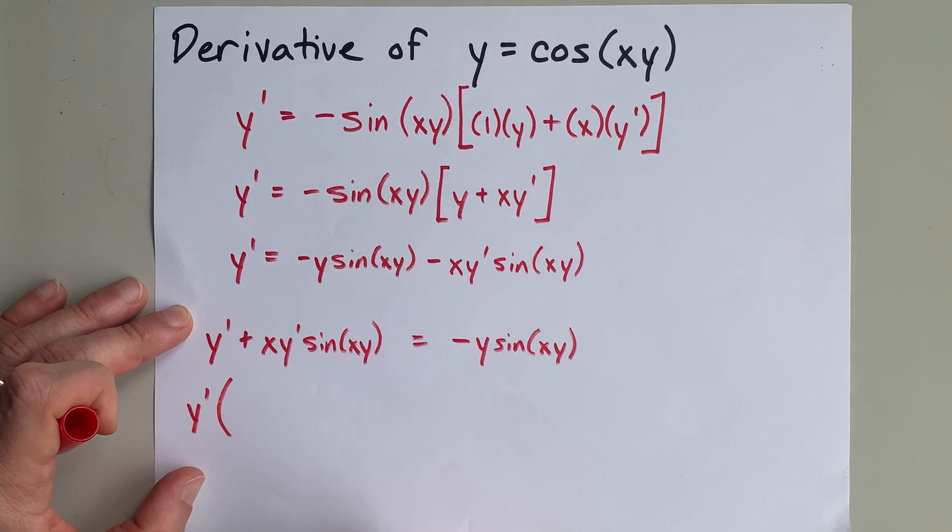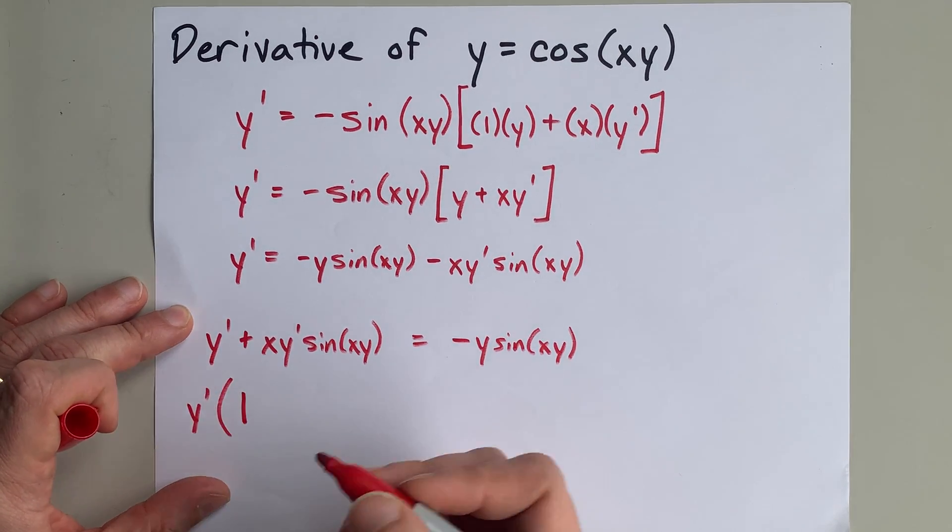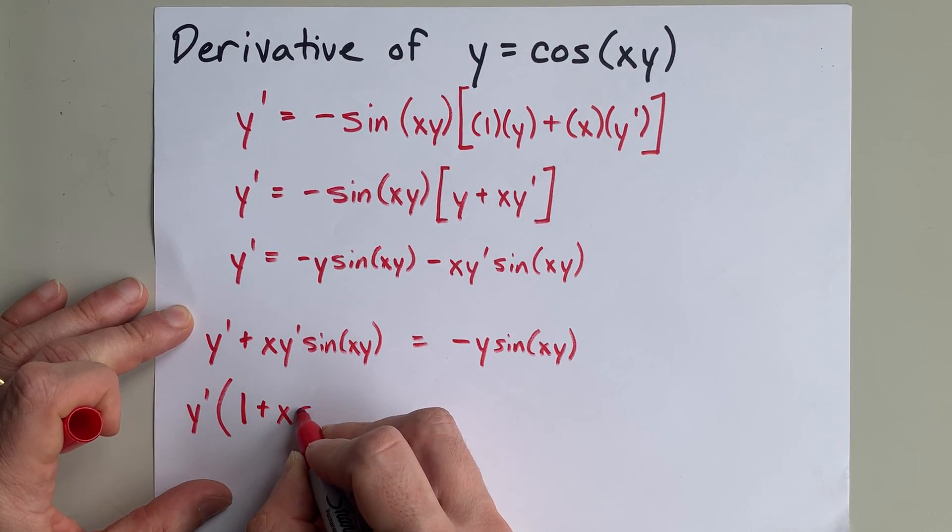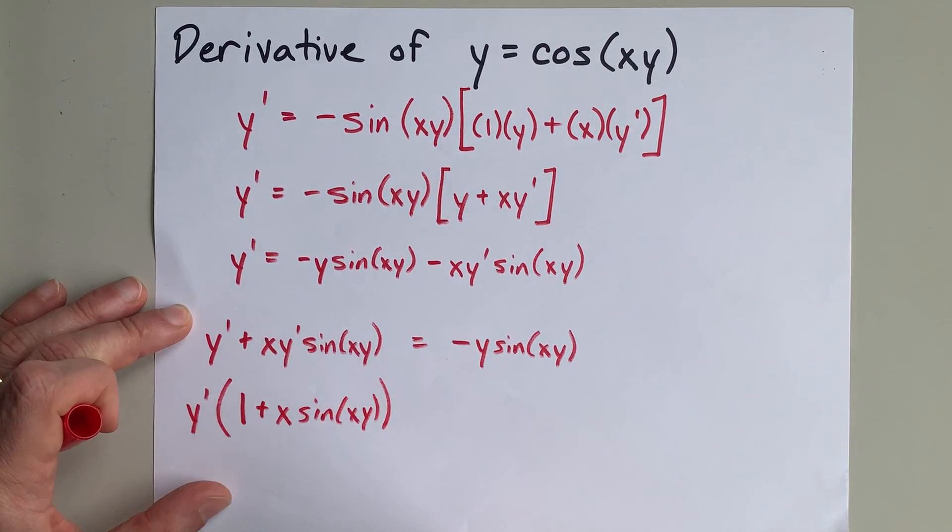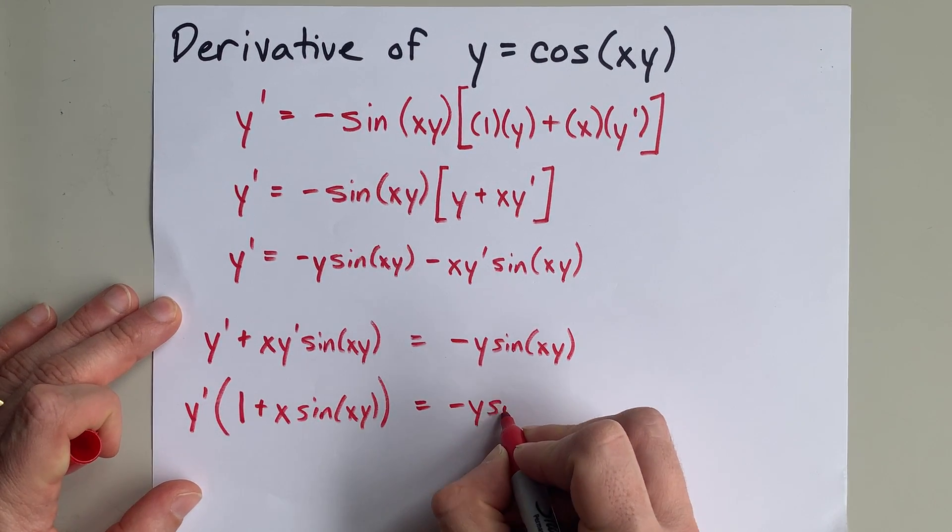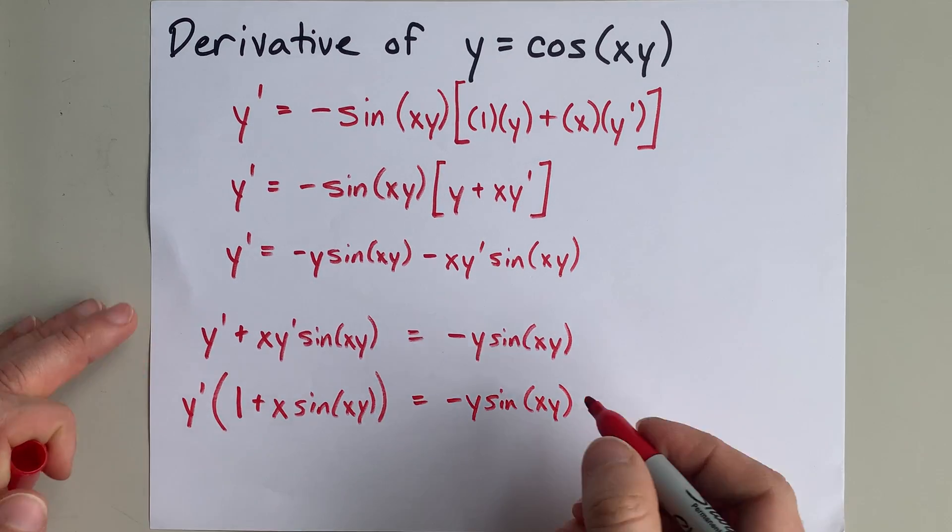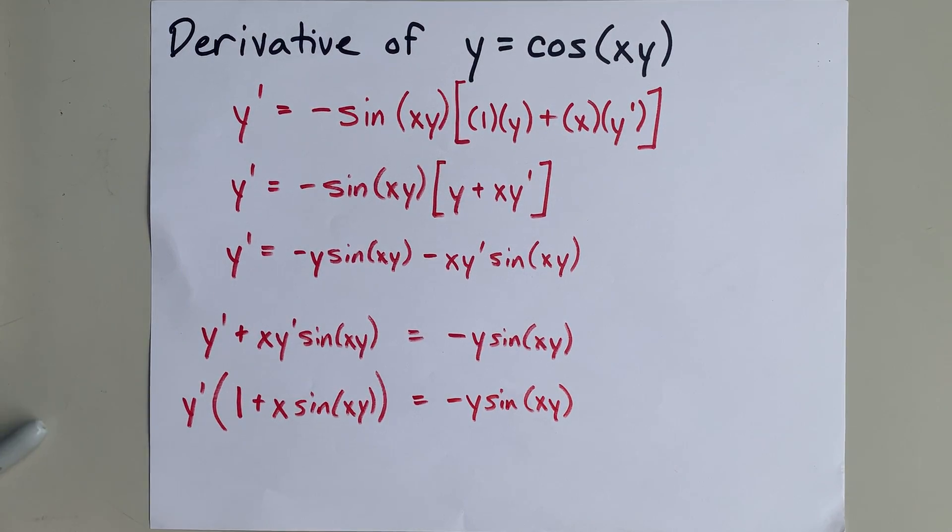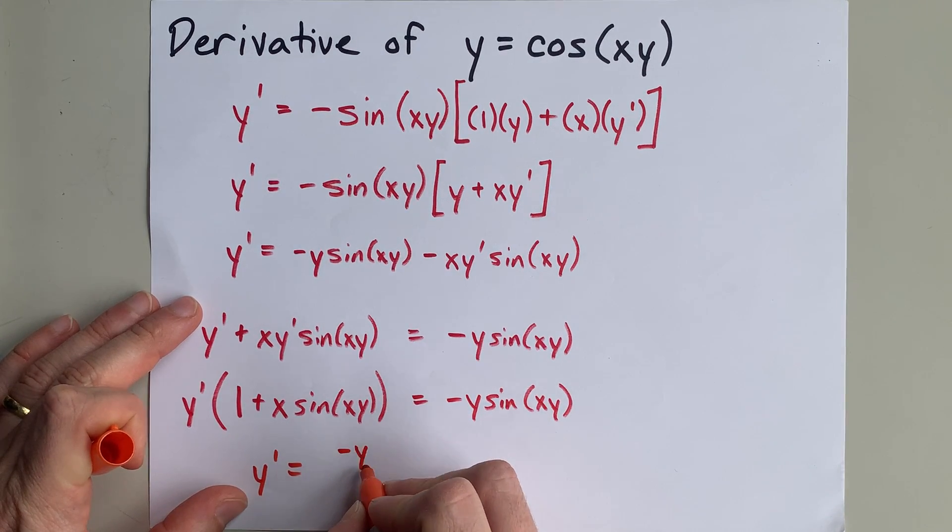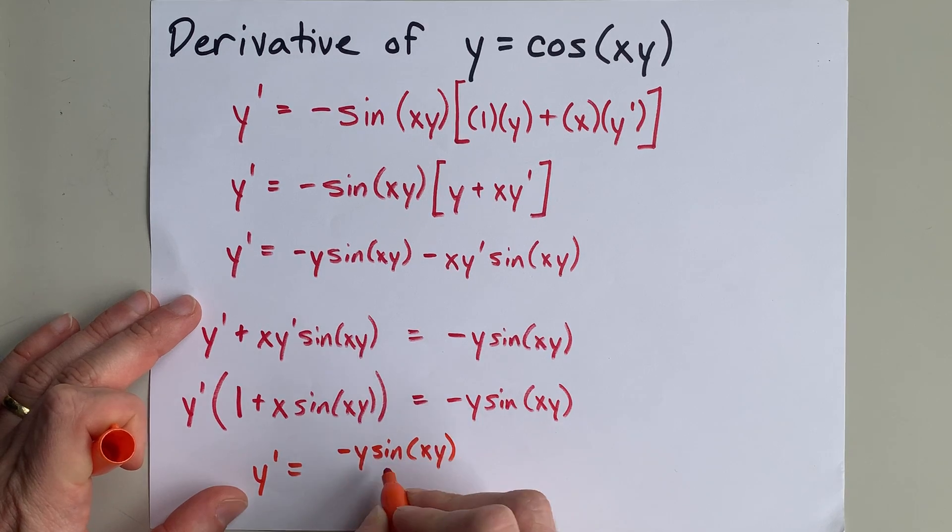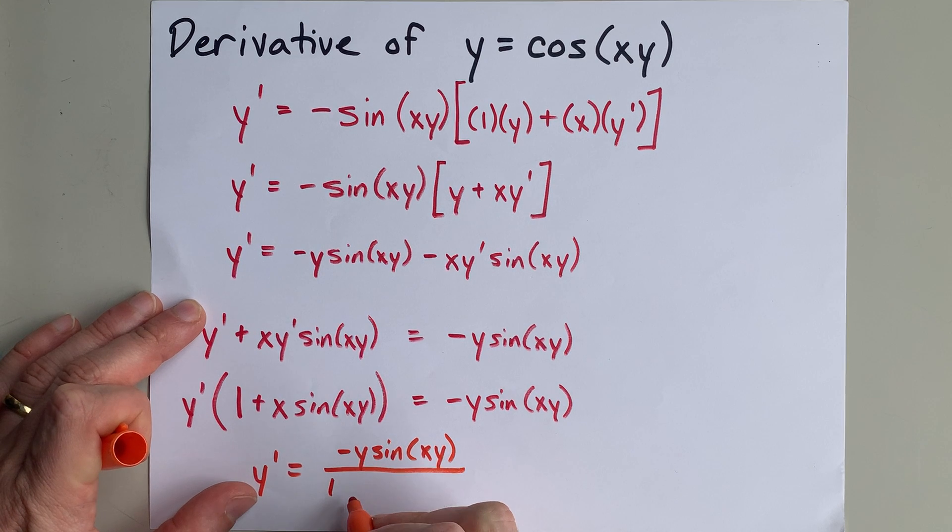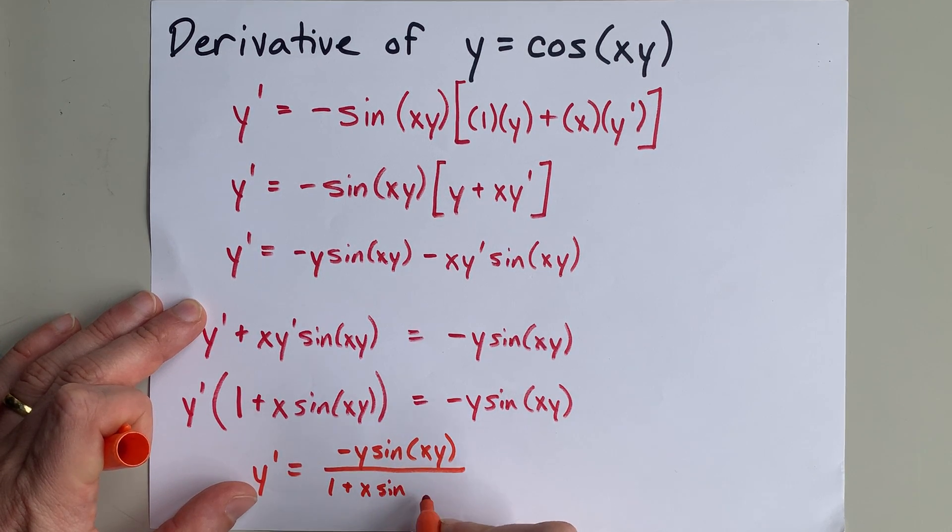Y prime factored when y prime is factored out of it is just 1. And when I factor y prime out of this, I'm left with plus x sine xy. I have y prime times a big chunk of stuff, and so to get rid of that chunk on the left, I can divide it out on the other side. My final answer here is that y prime is negative y sine xy on the top of a fraction divided by this whole thing, 1 plus x sine xy.